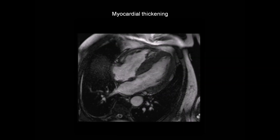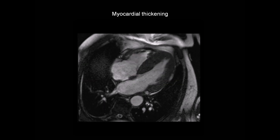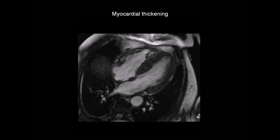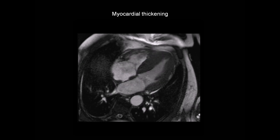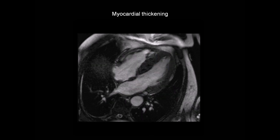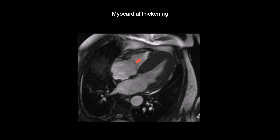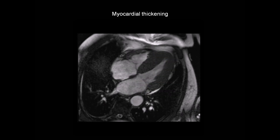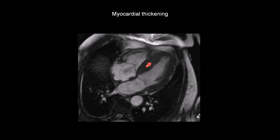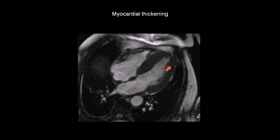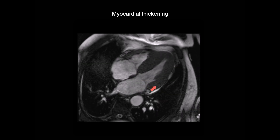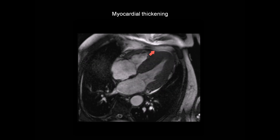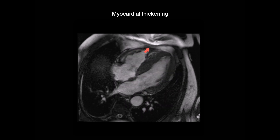Here's another example of myocardial thickening, from an 81-year-old man with cardiac amyloidosis. This shows a cine CMR in the four-chamber view, so we have left and right ventricles and left and right atria. What we see here is marked concentric thickening of the left ventricular myocardium, but also thickening of the right ventricle as well.